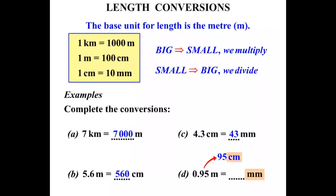We then need to change centimeters to millimeters. So the connection there: ten millimeters make up a centimeter. And changing from centimeters to millimeters we times by that ten. So ninety-five times ten is nine hundred and fifty.